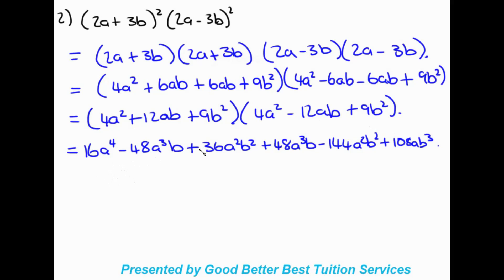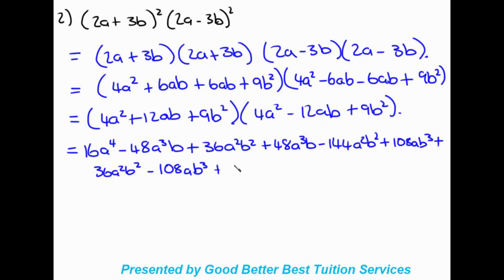Moving to the third term — this gets to the next line so it can be harder to track. 9b squared times 4a squared gives positive 36a squared b squared. Then 9b squared times negative 12ab gives negative 108ab cubed. Then 9b squared times 9b squared gives positive 81b to the power of 4. Now we revert to collecting like terms.